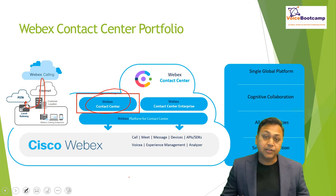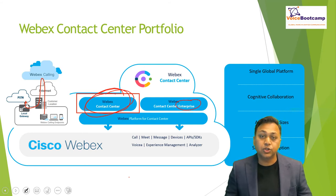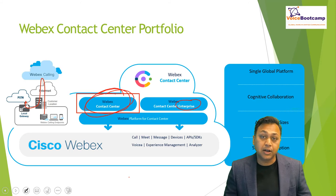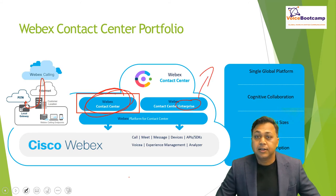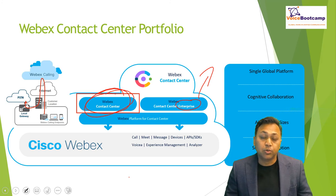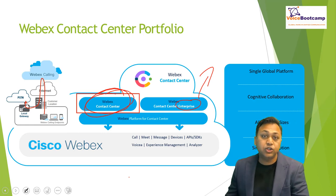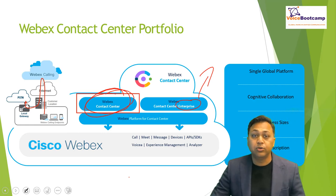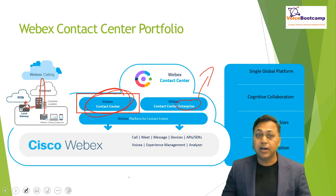The Cisco WebEx Contact Center has two flavors: you've got the regular Contact Center, and then you've got the Enterprise Edition. The Cisco WebEx Contact Center has a limitation of up to 3,000 agents, whereas Enterprise can go higher. It does provide a single global platform for your contact center throughout the world. So if you have branches in Asia or in Europe and you'd like to provide a contact center for all those places, you could do that using this platform.